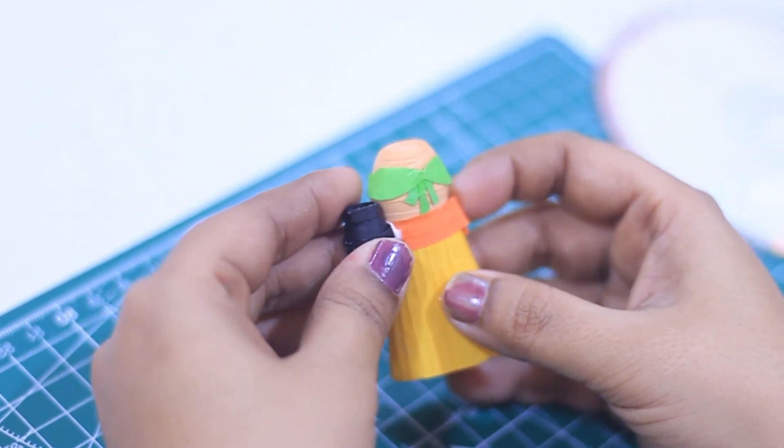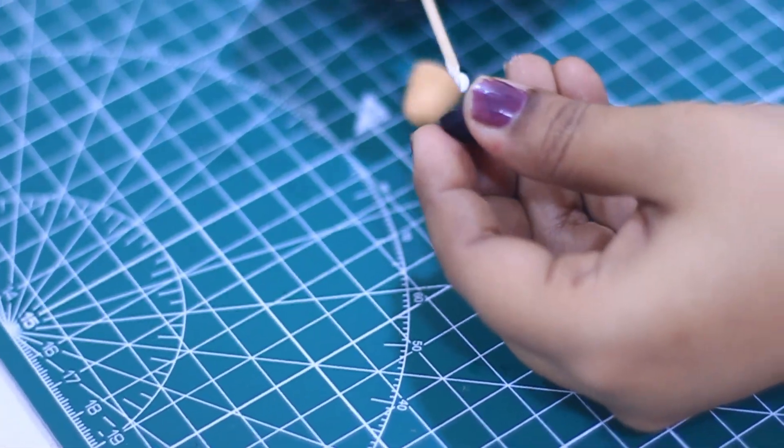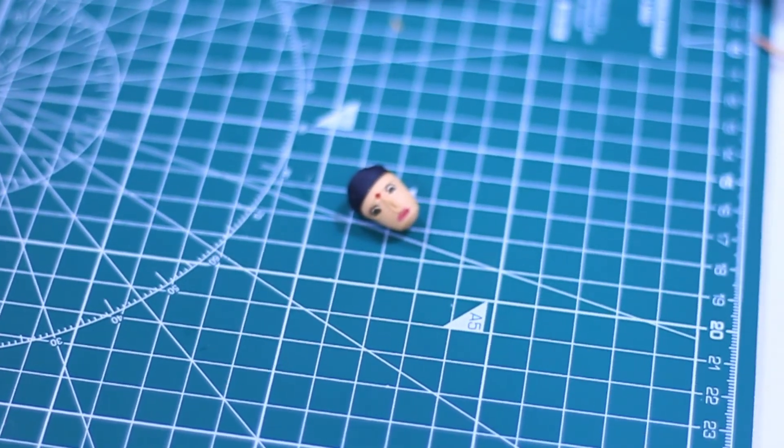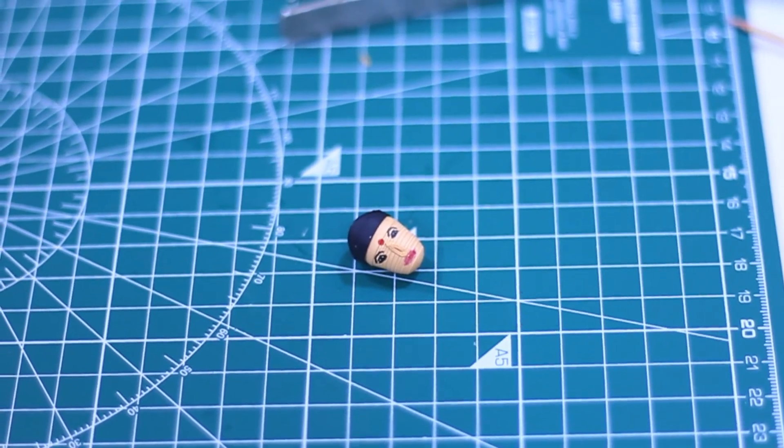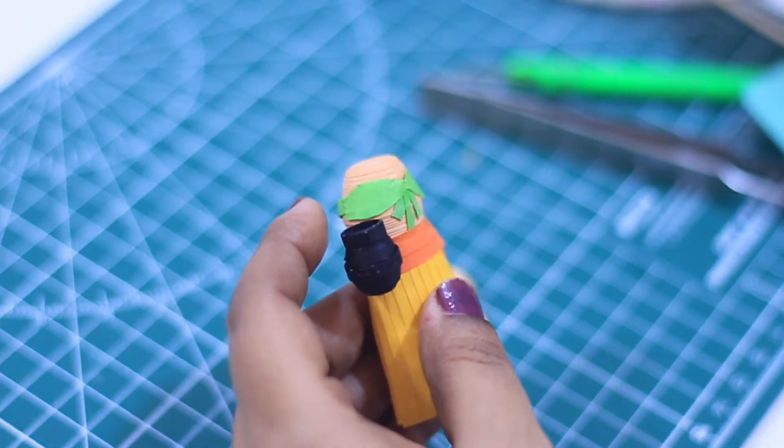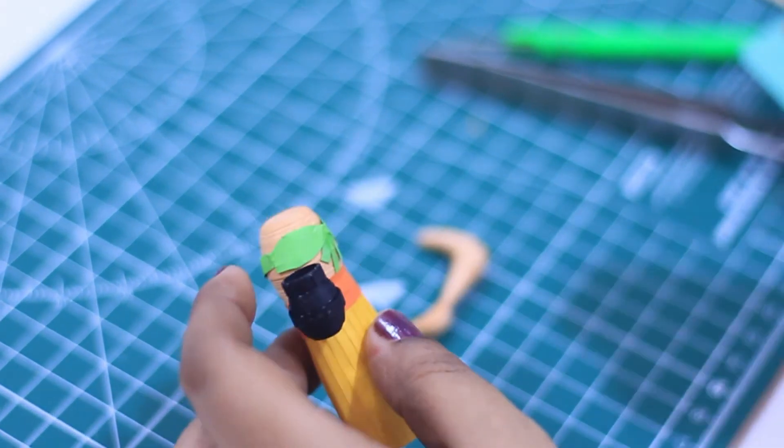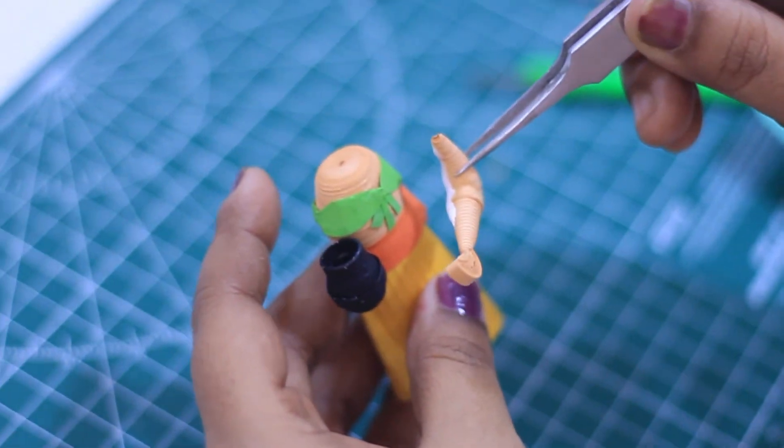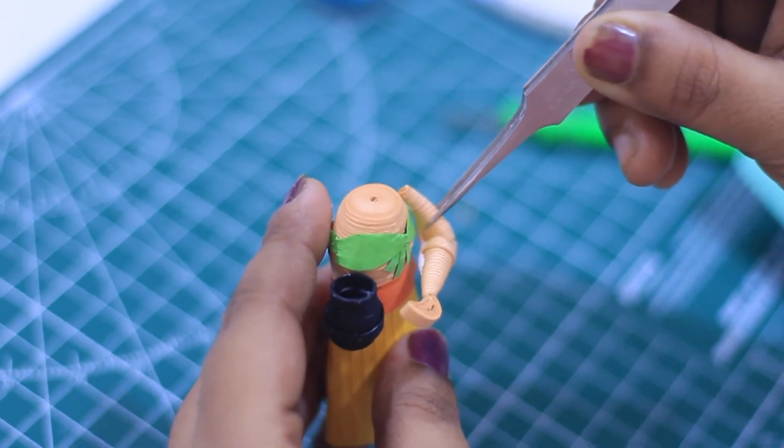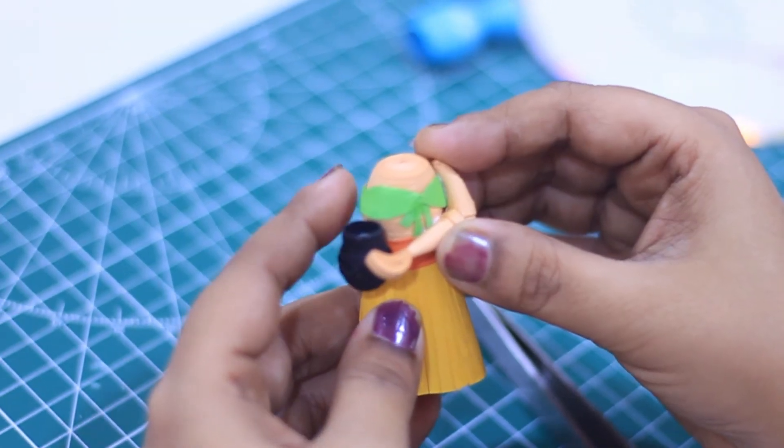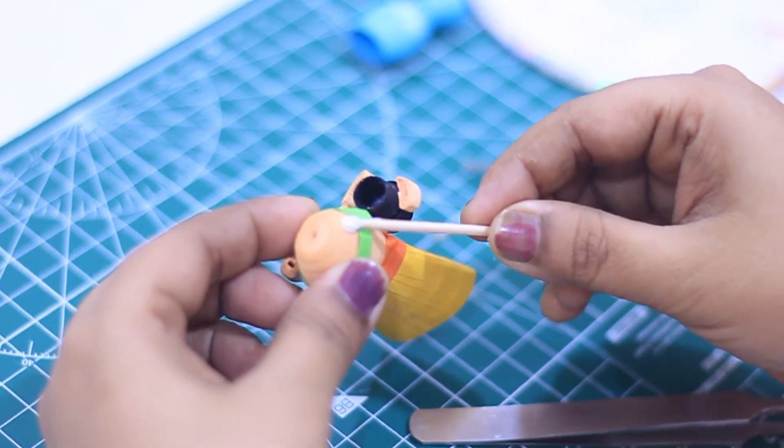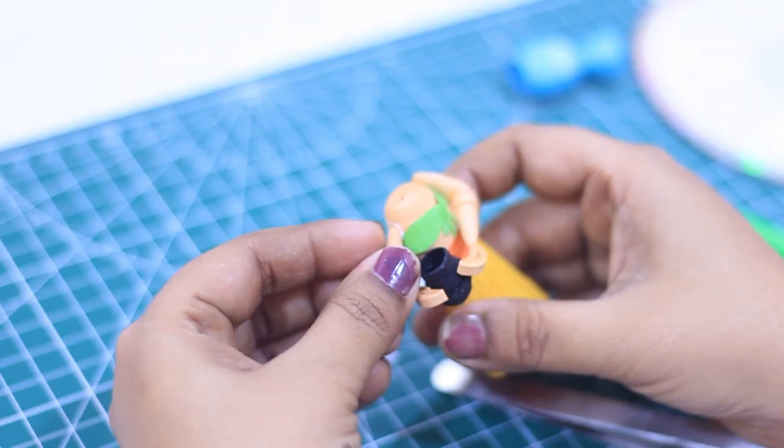Now let's assemble head and the face like this and keep it to dry. I have made some features like eyes, nose, lips and bindi. Now let's assemble the left hand to the body and hold it for some time and then let it dry. Now also assemble right hand like this. For this I have assembled the upper portion, then the elbow, and then the lower portion of the hand.